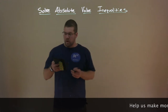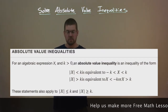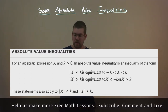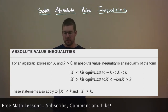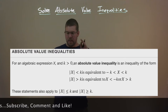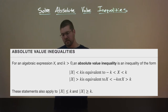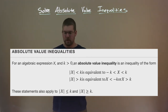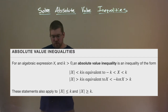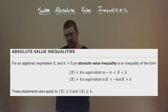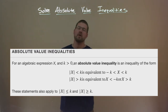So what is an absolute value inequality? For an algebraic expression x, and k is greater than zero, an absolute value inequality is of the form: absolute value of x less than k is equivalent to negative k less than x less than k. Also, absolute value of x greater than k is equivalent to x less than negative k, or x greater than k. These statements also apply to the less than or equal to and greater than or equal to forms.